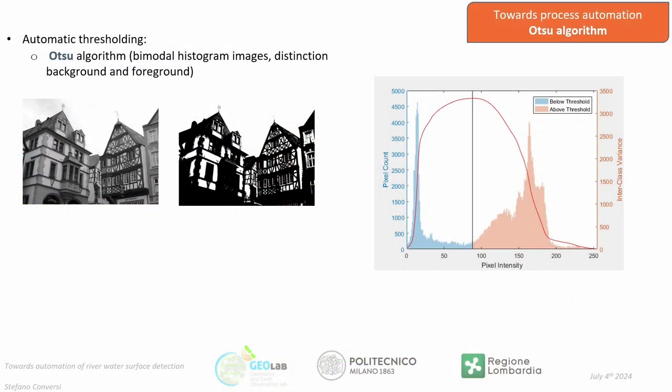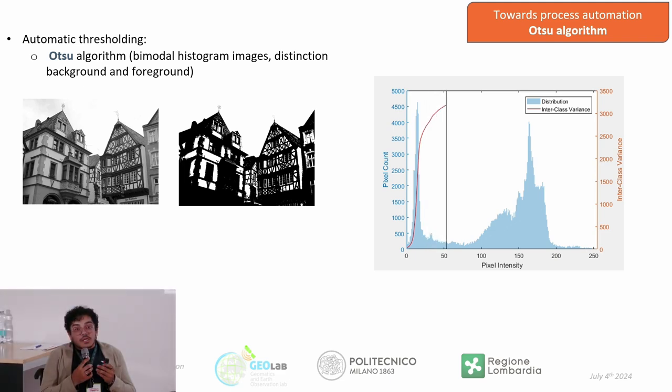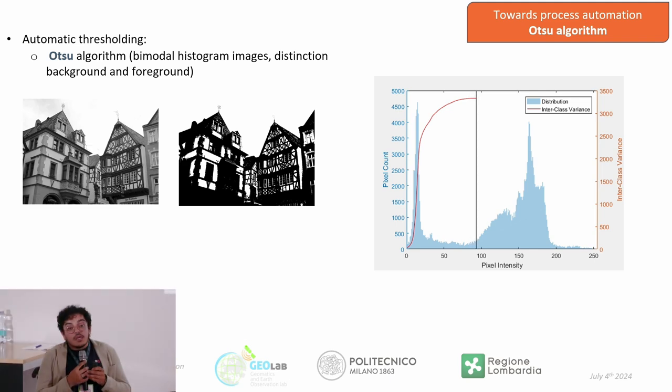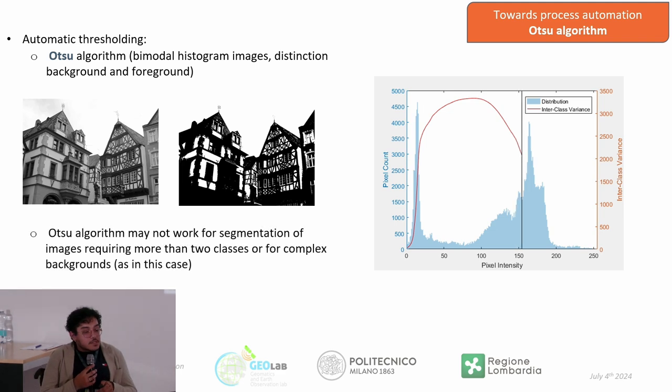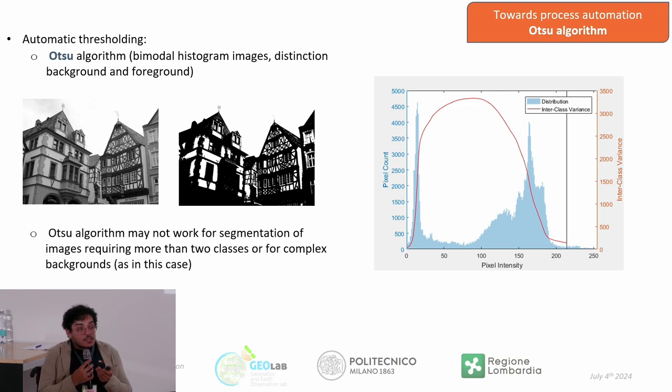For the automatic procedure, we use automatic thresholding through the Otsu algorithm, which identifies the pixel intensity value for distinguishing between two classes. This requires bimodal images to distinguish background from foreground, and the algorithm autonomously defines the threshold. However, the Otsu algorithm only works for bimodal images, and real imagery is not at all bimodal — so we needed to solve this problem.